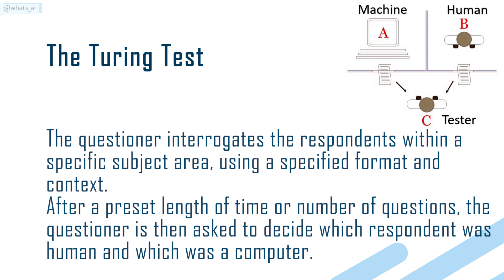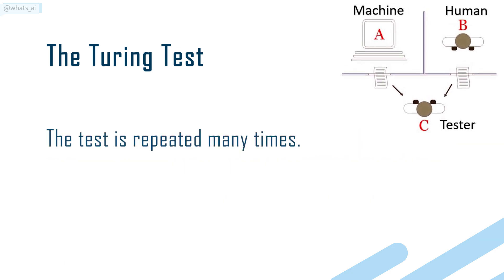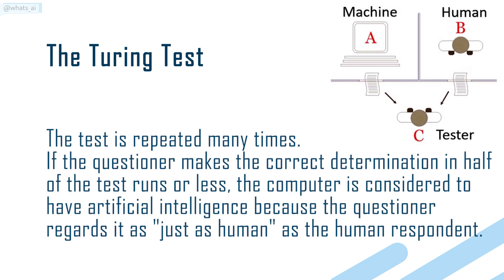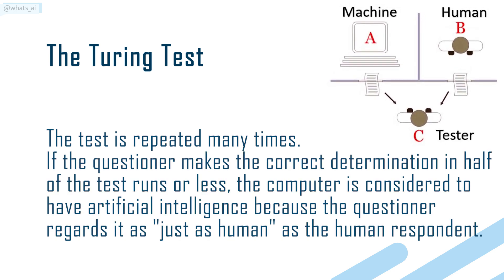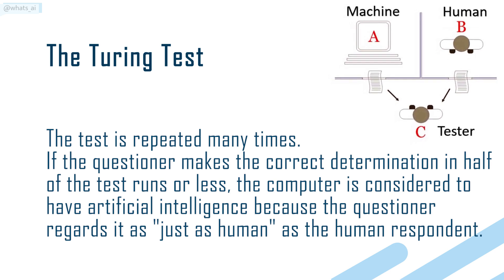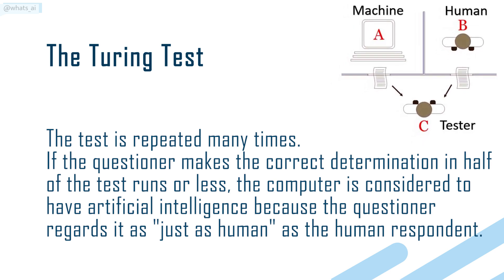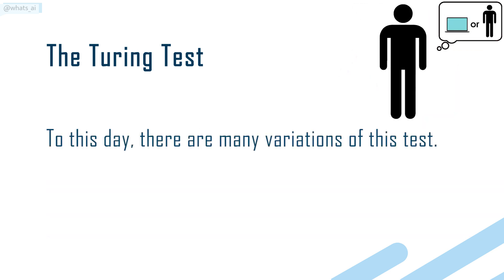After a preset length of time or number of questions, the questioner is then asked to decide which respondent was human and which was a computer. The test is repeated many times. If the questioner makes the correct determination in half of the test runs or less, the computer is considered to have artificial intelligence because the questioner regards it as just as human as the human respondent.